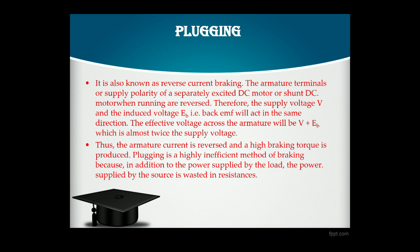The armature current is reversed and a high braking torque is produced. Plugging is a highly inefficient method of braking because, in addition to the power supplied by the load, the power supplied by the source is also wasted in resistance. If the braking torque is highly increased, current also increases, generating more heat. It is an inefficient method for DC motors, but it is a very efficient method in the case of three-phase induction motors.